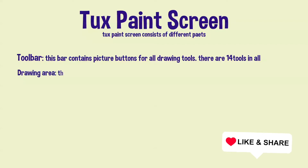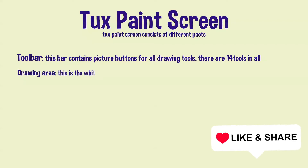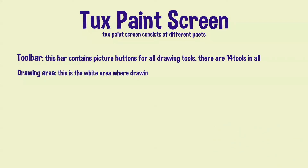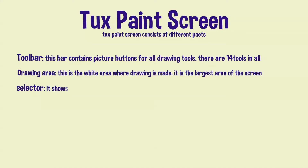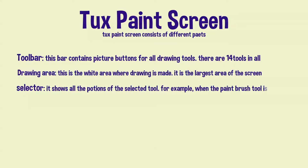The Drawing Area is the white area where drawing is made. It is the largest area of the screen. The Selector shows all the options of the selected tool. For example, when the Paint Brush tool is selected, it shows the various brushes available.